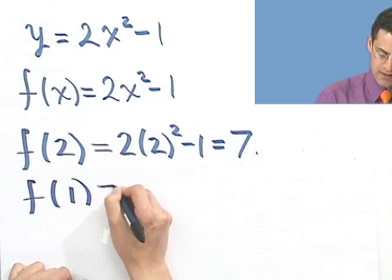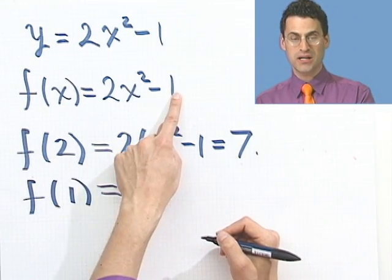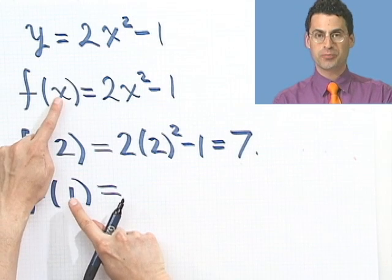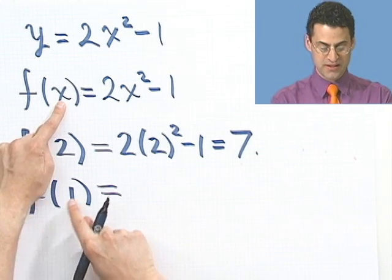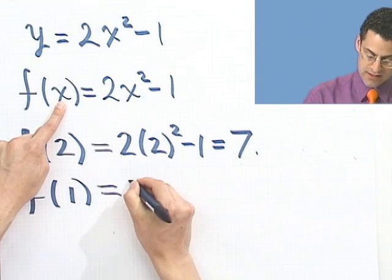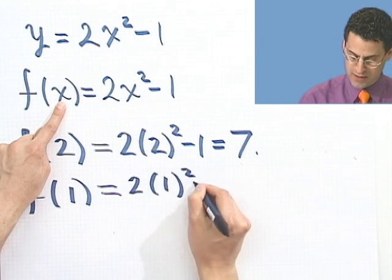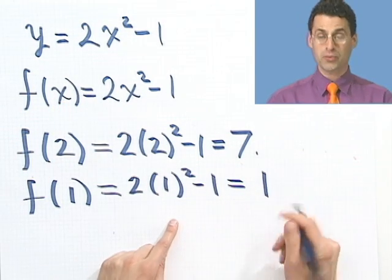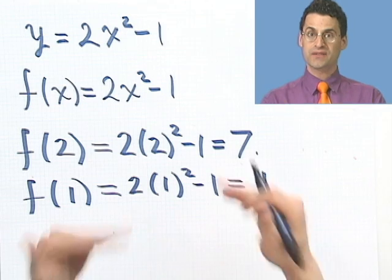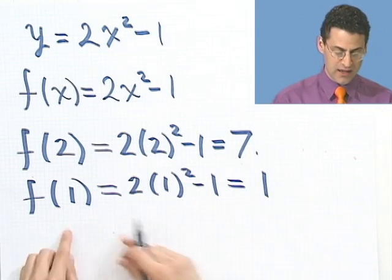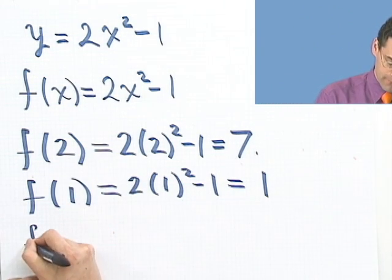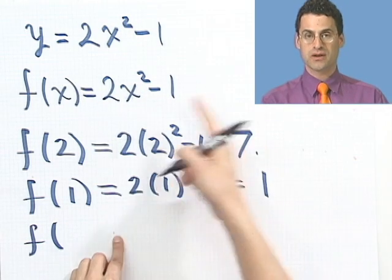What's f of 1 mean? Well, I go back to the function, and wherever I see an x, I'm going to replace all x's by just whatever's in this thing. In this case, it's 1. So I see 2 times 1 squared minus 1. Well, if you compute that, it's 1. I'm evaluating the function in a really easy way. I'm just plugging in whatever's in this parentheses wherever I see x.